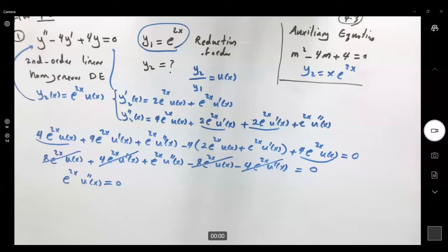Here you can use these two are equal to 0 but e to the power 2x is never 0. So what's left? The second derivative of u at x equal to 0.